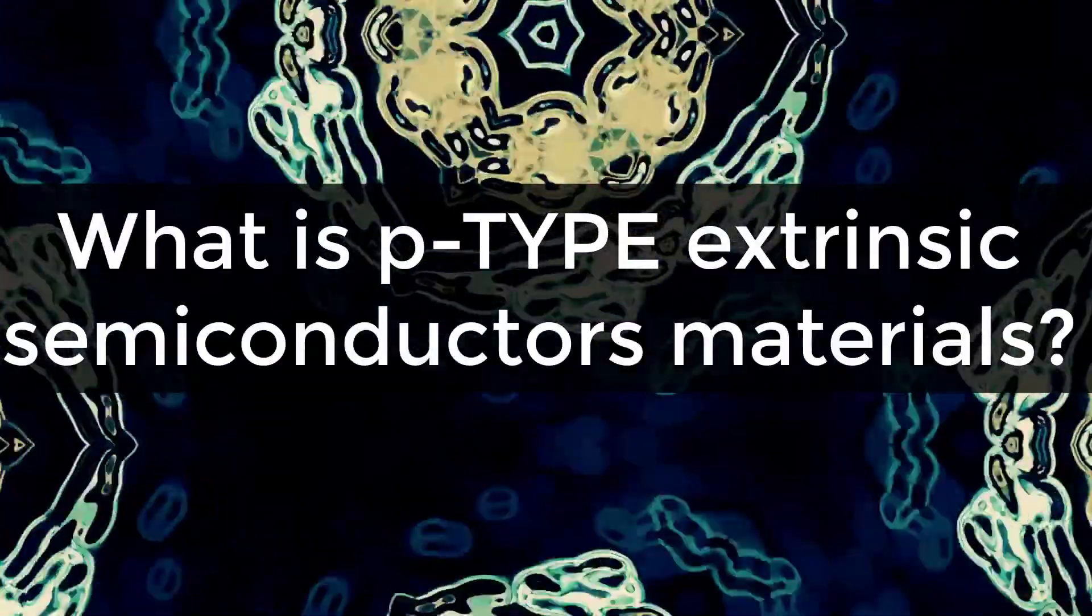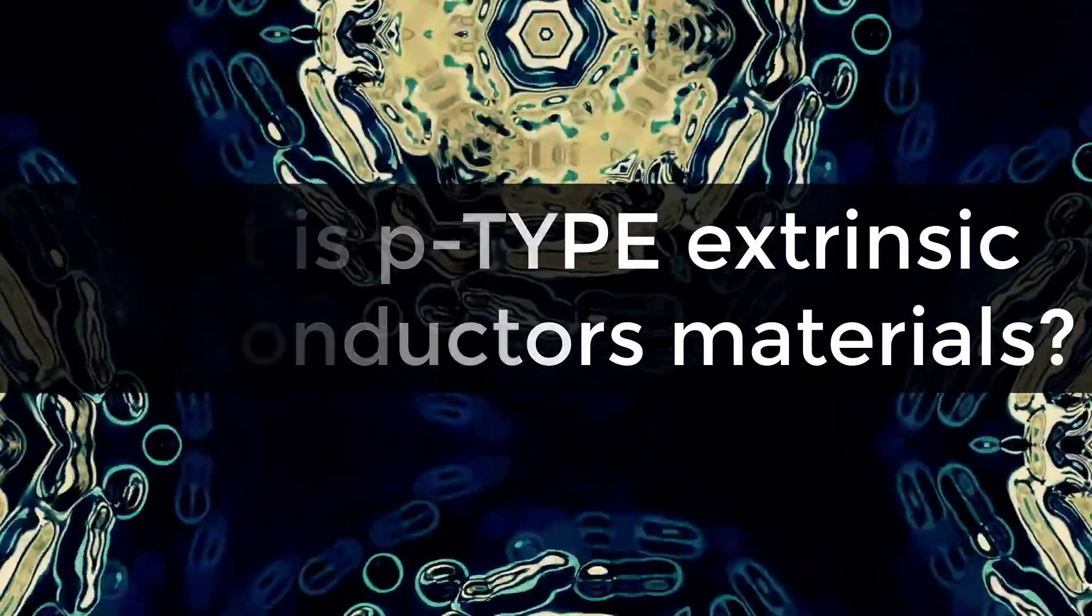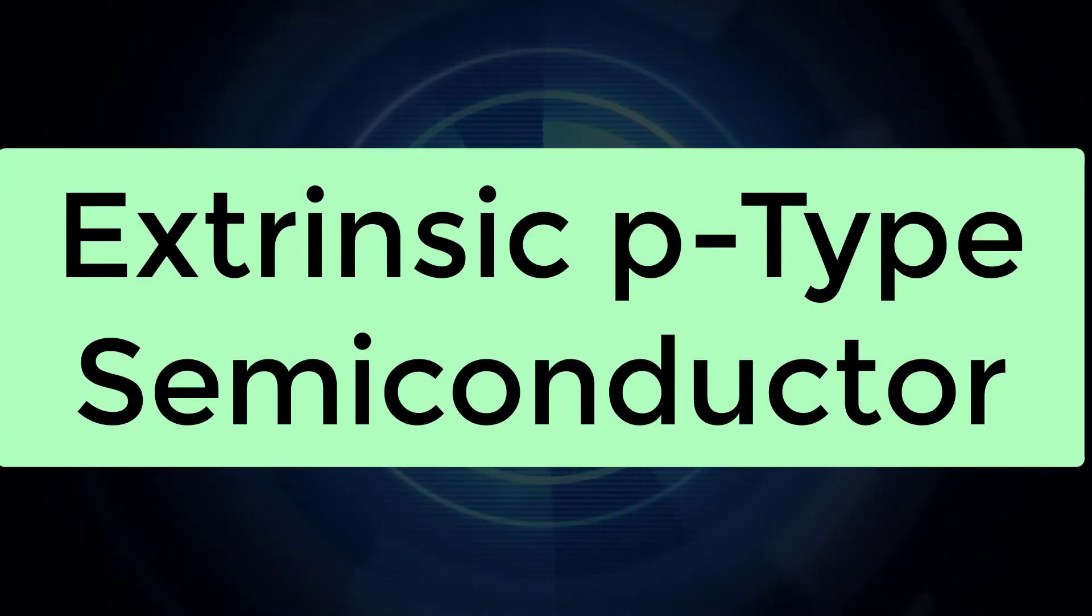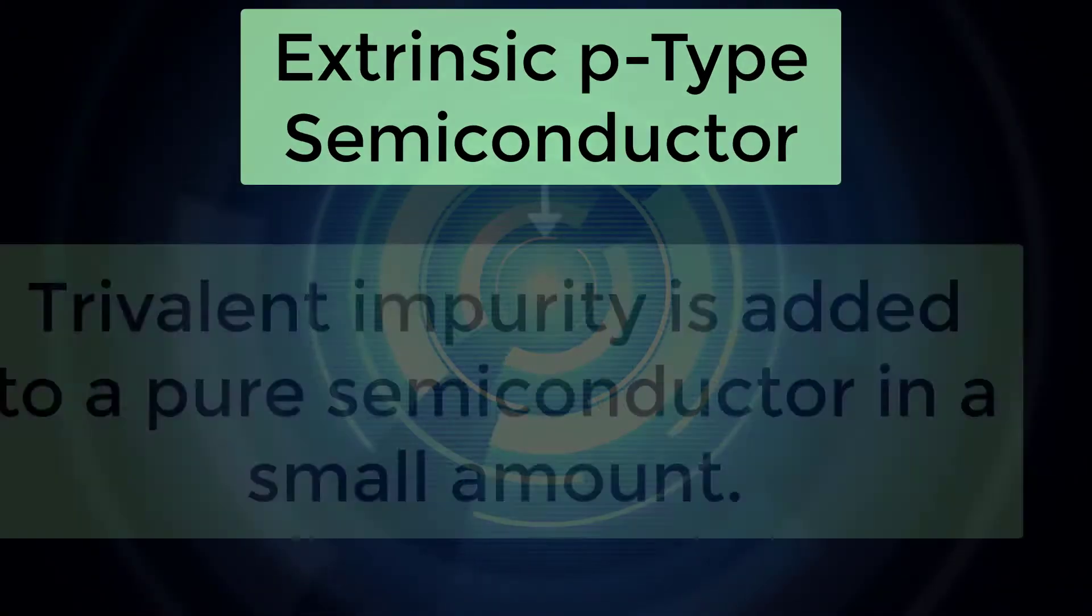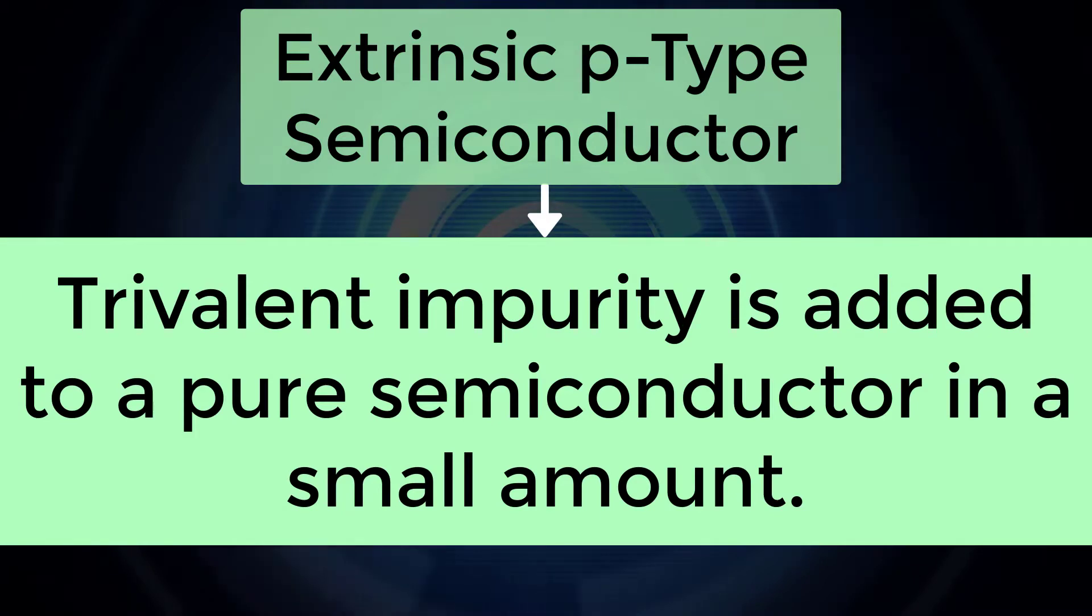What is P-Type Extrinsic Semiconductor Material? The Extrinsic P-Type Semiconductor is formed when a trivalent impurity is added to a pure semiconductor in a small amount.